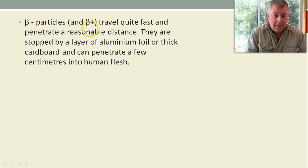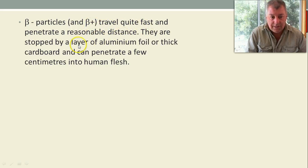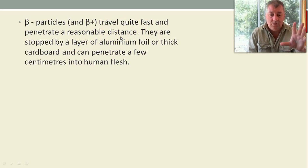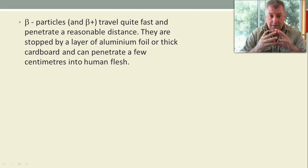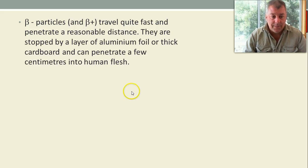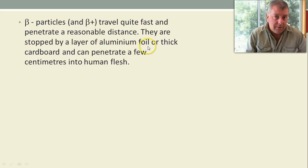So, beta particles and positrons travel quite fast and penetrate reasonable distances, because they're so small and travelling so fast they can get through lots of things, because most of matter is nothing. And so they go a long way before they actually interact with any matter. They are stopped by a layer of aluminium. Now that compares to alpha, which was a piece of paper, or thick cardboard. They can go a few centimetres into human flesh.